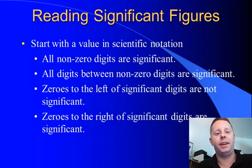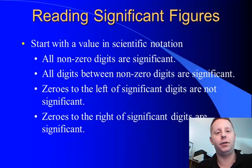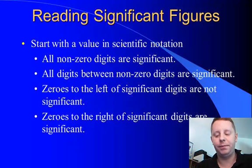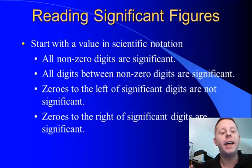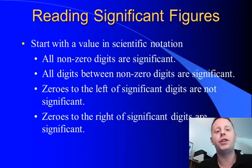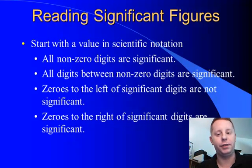Now, reading significant figures is slightly more complicated, but still fairly straightforward. First off, we'll start with the value that's already in scientific notation. All non-zero digits are significant. All digits between any non-zero digits are significant. Zeros to the left of significant digits are not significant, but zeros to the right of significant digits are significant.